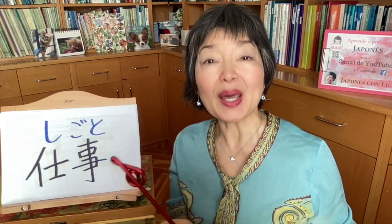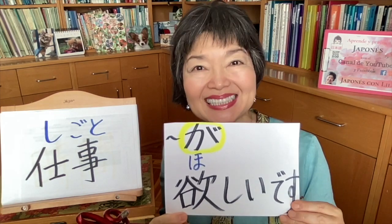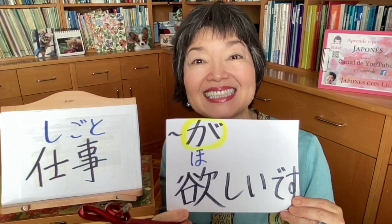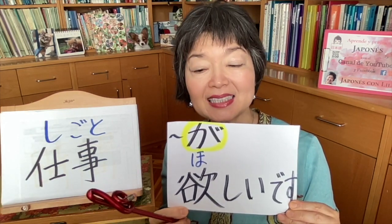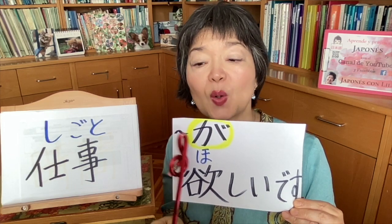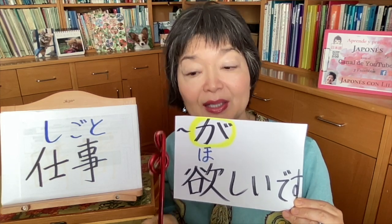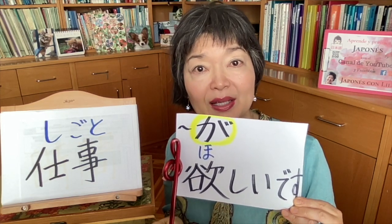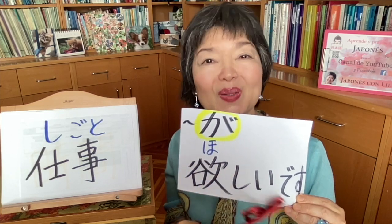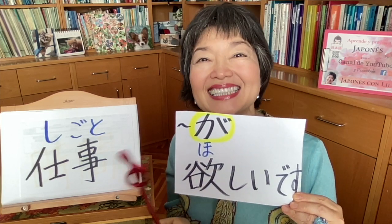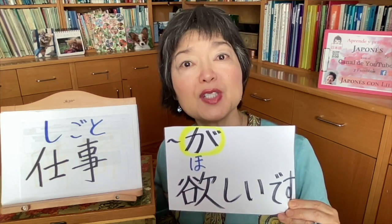仕事 (shigoto) means 'job' or 'work.' So 'I want a job' is 仕事 が ほしいです. Always remember the structure: noun + が ほしいです. The noun goes before が.